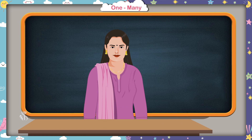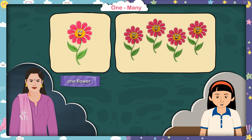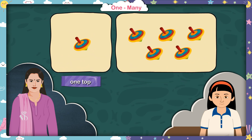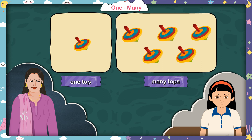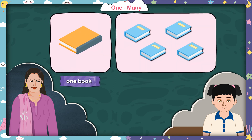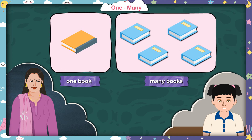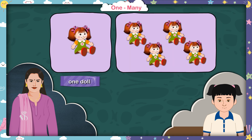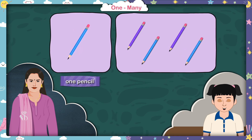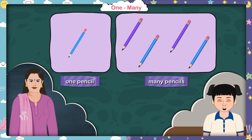Now we will see some more pictures. You have to find out one thing and many things in them. Madam, there is one flower and these are many flowers. This is one top and these are many tops. This is one chocolate and these are many chocolates. This is one book and these are many books. This is one doll and these are many dolls. This is one pencil and these are many pencils.